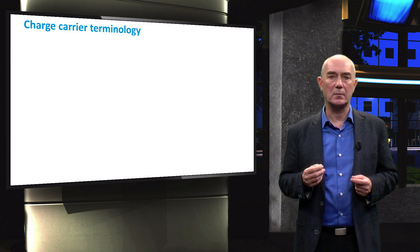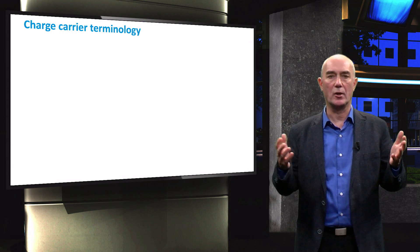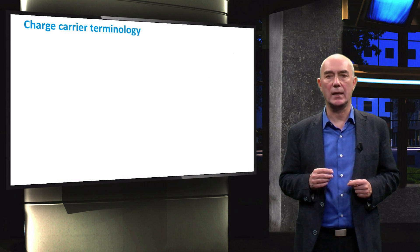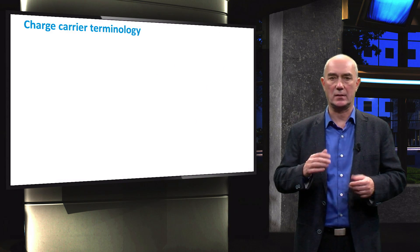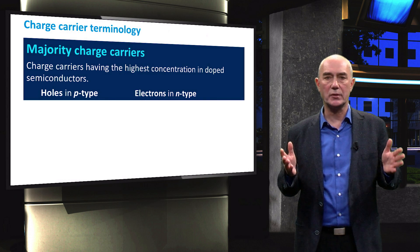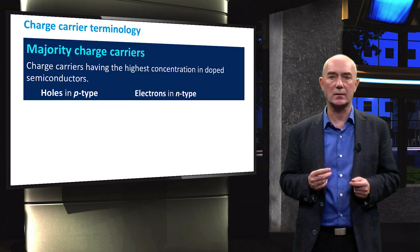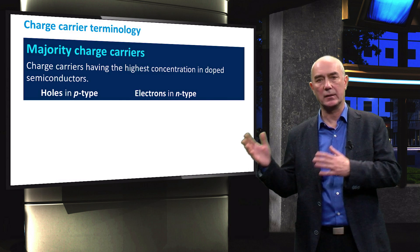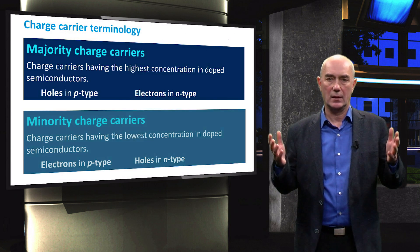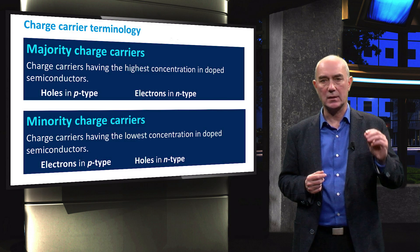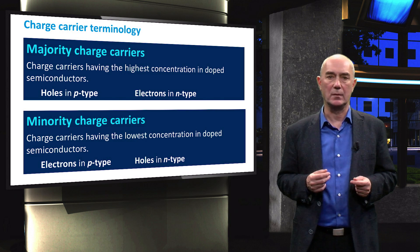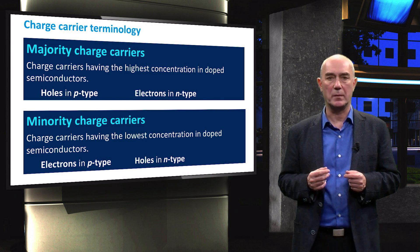We have seen how doping can manipulate the concentration of electrons and holes in semiconductors. Due to the mass action law, when one type of charge carrier is increased, the other type is decreased. We call the carriers whose concentration is much larger than that of the other type majority carriers — these are holes in P-type materials and electrons in N-type materials. Minority charge carriers are the carriers with much lower concentration — these are electrons in P-type materials and holes in N-type materials.